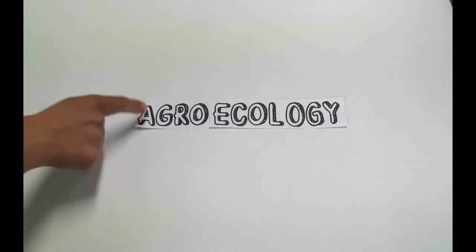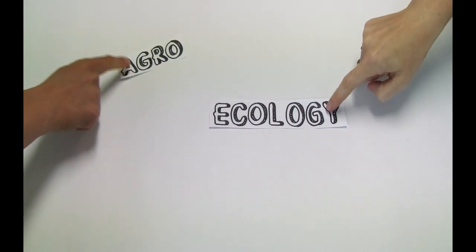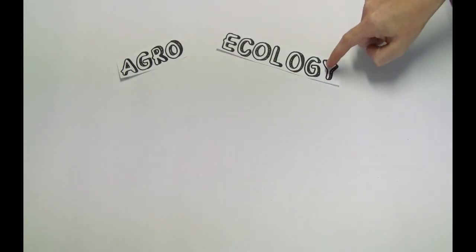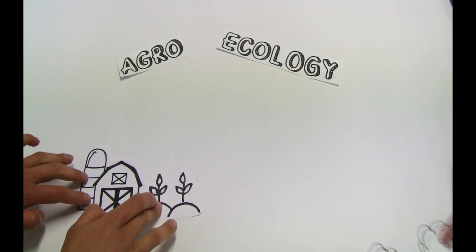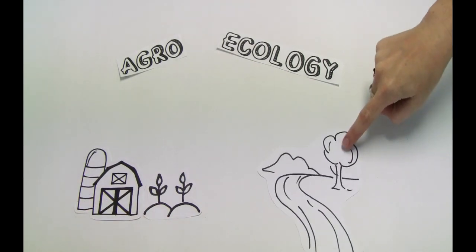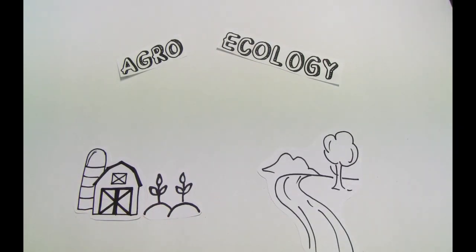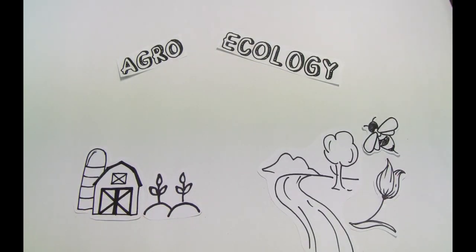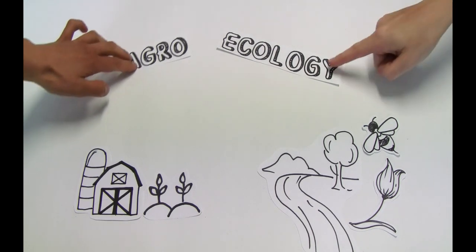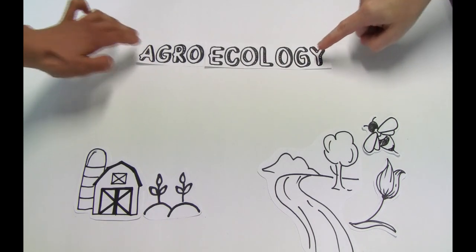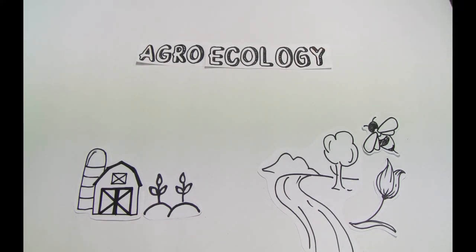Agroecology is a combination of agro and ecology. Agro stands for agriculture while ecology deals with the relations among living organisms and their physical surroundings. Together they create an umbrella for several aspects.